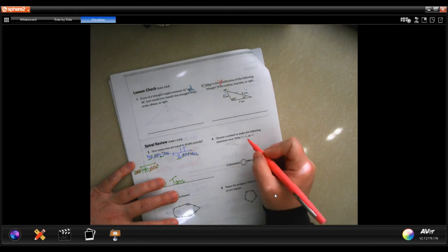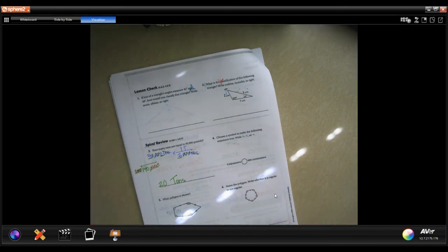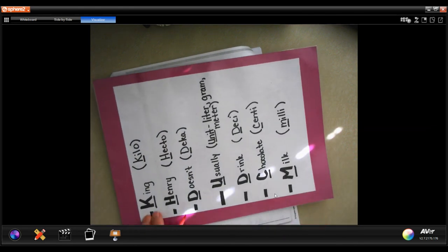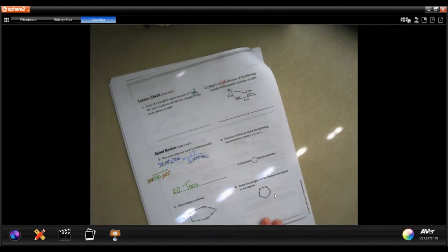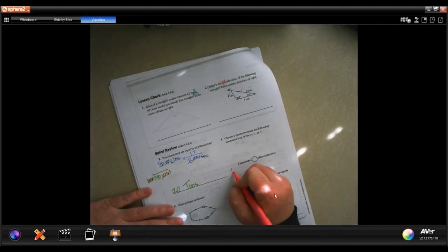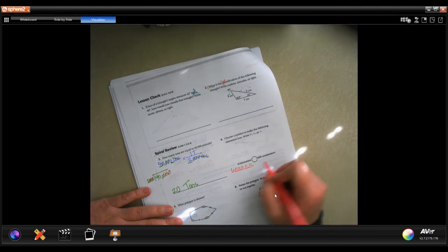Choose a symbol to make the following statement true, so six kilometers or 600 centimeters. Well, let me grab King Henry. We're going to turn kilometers into centimeters, so from kilo to centi. We're going to go one, two, three, four, five bumps. So currently it's right there. I'm going to go one, two, three, four, five bumps. I'm going to fill those bumps in with zeros. Well, that's definitely bigger than 600 centimeters.